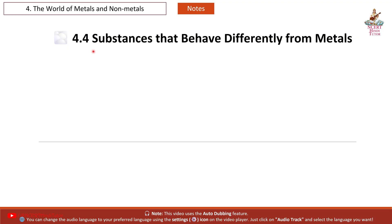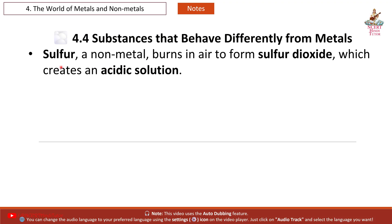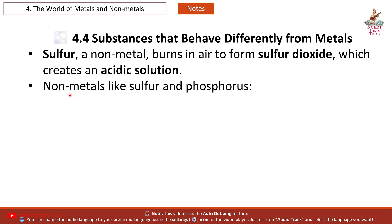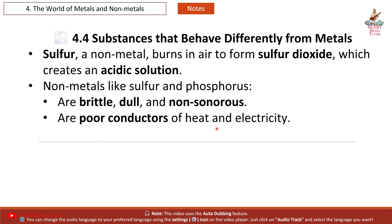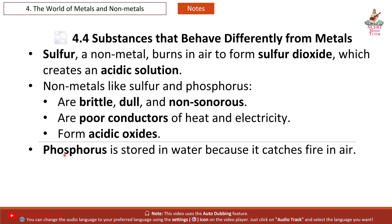4.4 Substances that Behave Differently from Metals: Sulphur, a non-metal, burns in air to form sulphur dioxide, which creates an acidic solution. Non-metals like sulphur and phosphorus are brittle, dull and non-sonorous, are poor conductors of heat and electricity, and form acidic oxides. Phosphorus is stored in water because it catches fire in air.